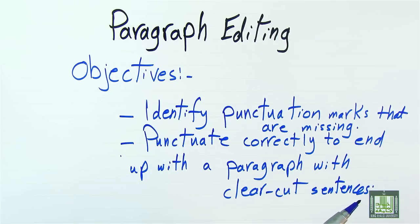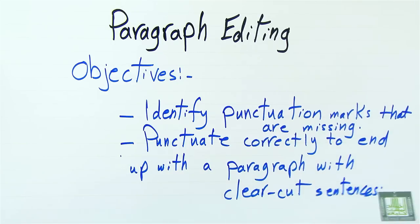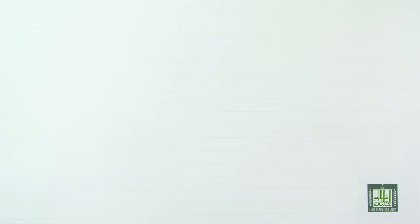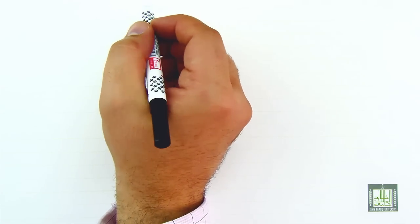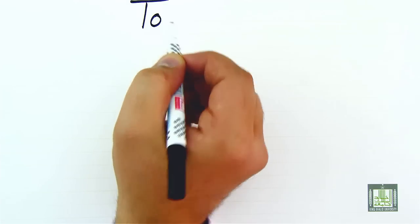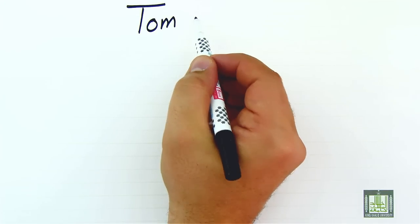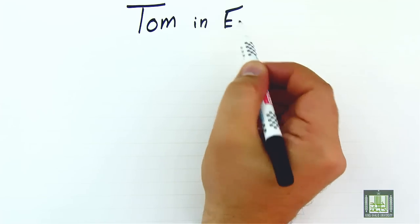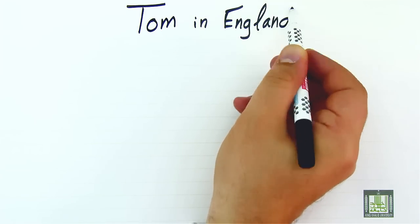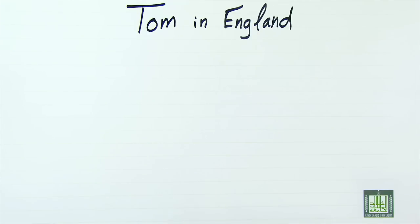So that we can come up at the end with a meaningful paragraph. Now we are going to write a paragraph and try to punctuate it and edit that paragraph. This paragraph is titled 'Tom in England.' This is the title, and the paragraph is as follows.